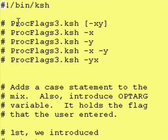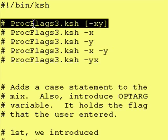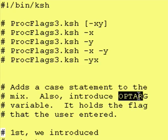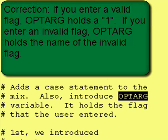So this is our code. We've just defined the name of the program and the optional flags, with the same examples we had last time. The other thing we're doing today is introducing the oparg variable. It's a reserved variable in Corn Shell and it holds the value of any flag you entered, whether it's a valid flag or an invalid flag.